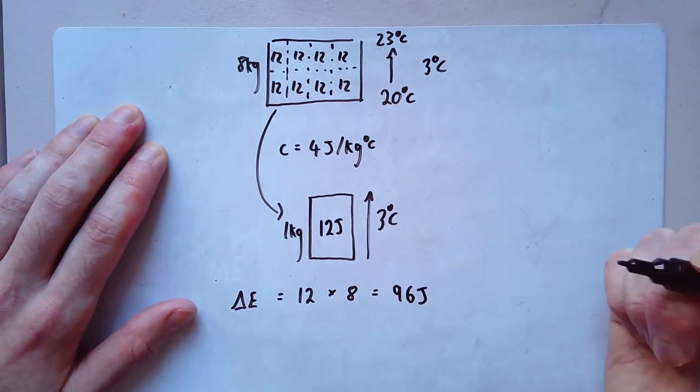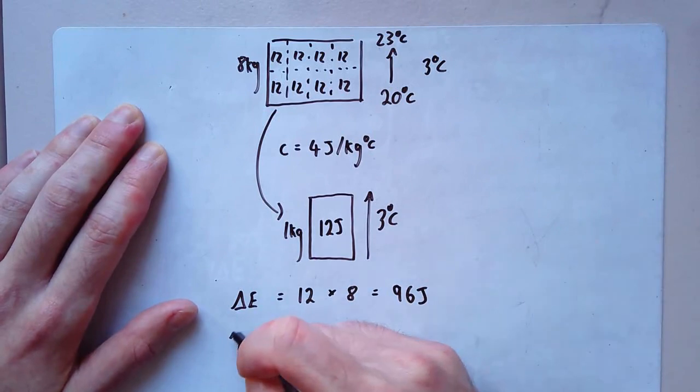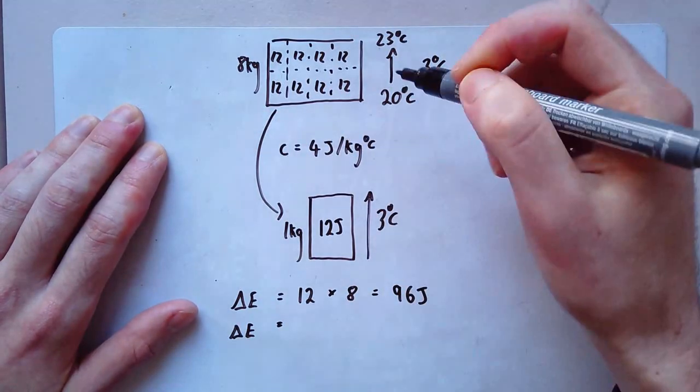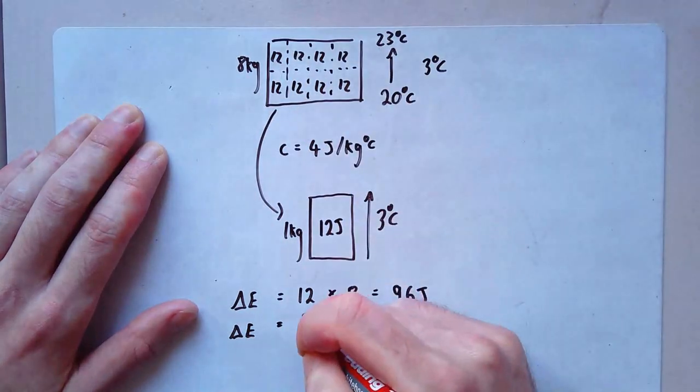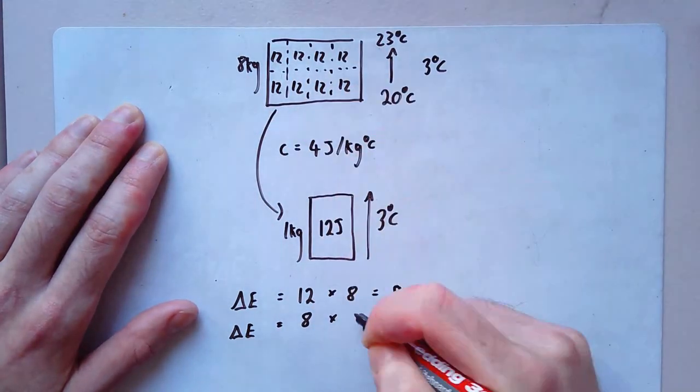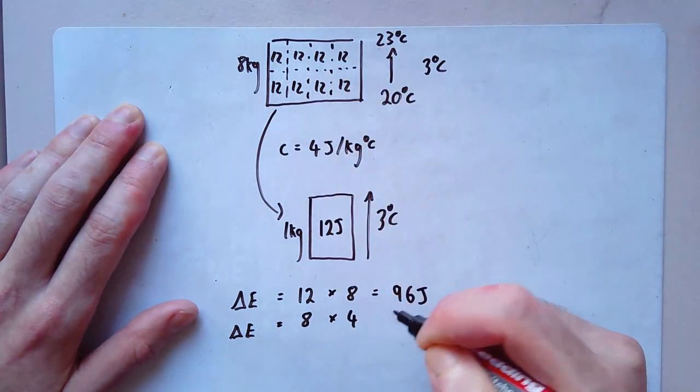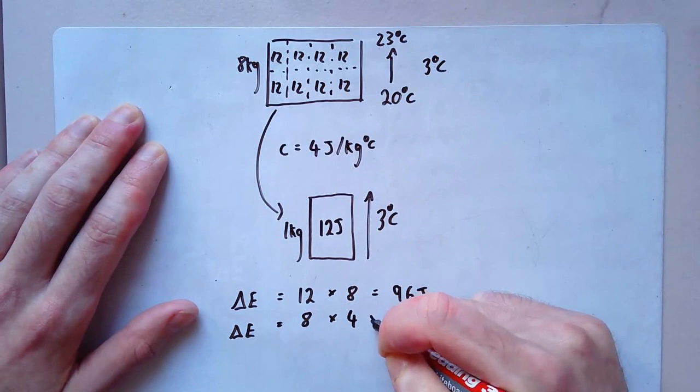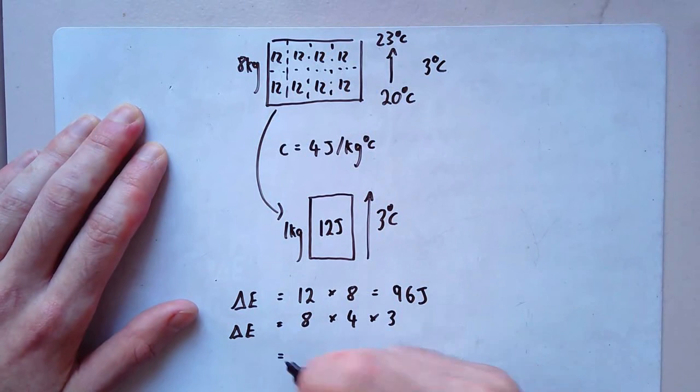Which means the amount of energy, or the delta E, is going to be 12 times by 8, which should give me 96 joules. How did I do that? I did the mass, which is 8, times by C, which is 4, times by 3, which is the temperature change. And that gives me overall a delta E of 96 joules.